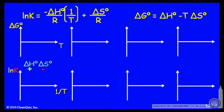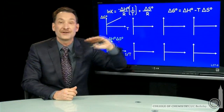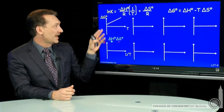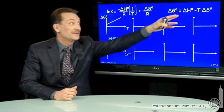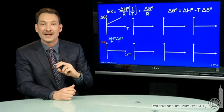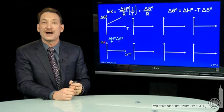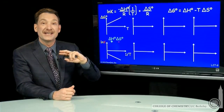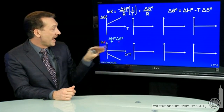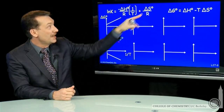For instance, if the enthalpy is positive and the entropy is negative and we're plotting free energy versus temperature, the intercept is determined by delta H. So positive delta H gives a positive intercept. The slope is determined by the opposite of delta S, so a negative delta S gives a positive slope. For ln K versus 1 over T, the slope is determined by delta H — positive delta H with the built-in negative gives a negative slope. And delta S negative gives a negative intercept.